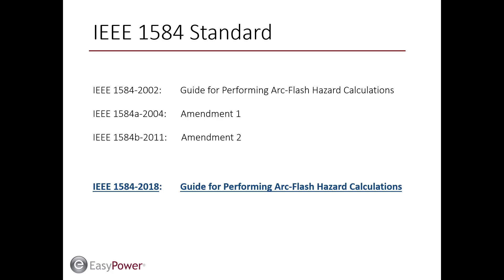Two amendments in 2004 and 2011 further refined the original standard. Nevertheless, the planning process for additional testing to improve the empirical arc flash model was already underway. A collaboration between IEEE and NFPA was formed to advance research around arc flash events and the parameters that affect their severity. Finally, on September 27, 2018, the new guide was approved by the Standards Association as IEEE 1584-2018.